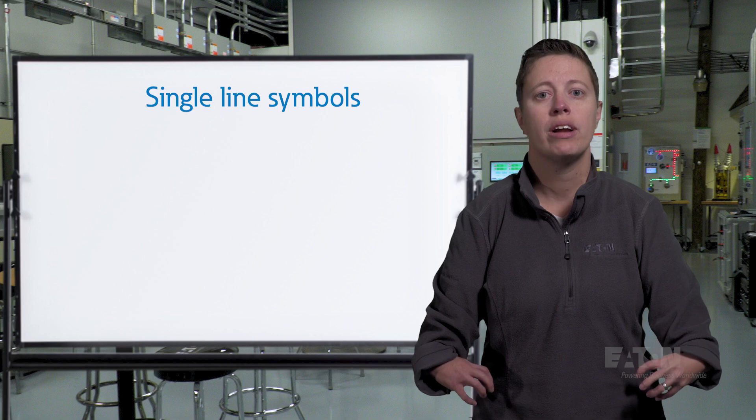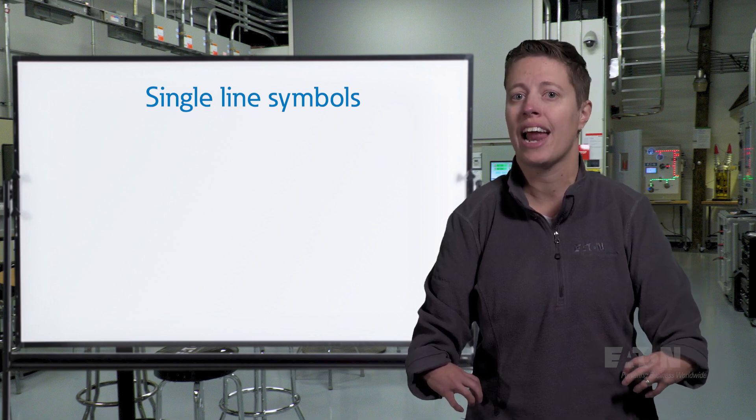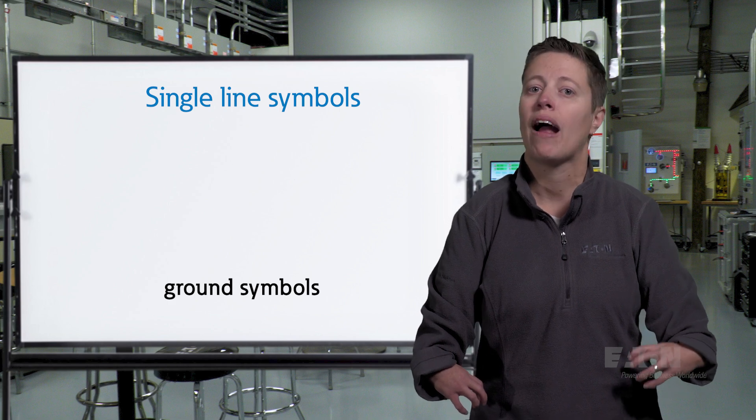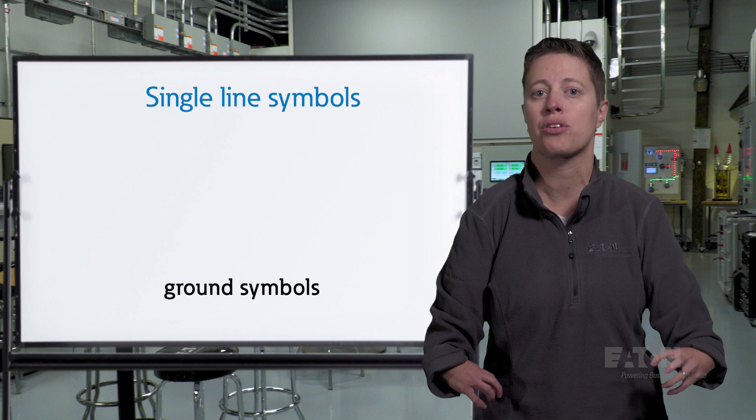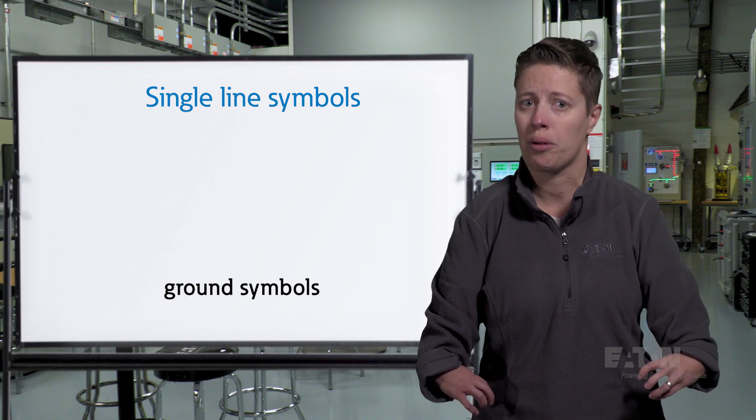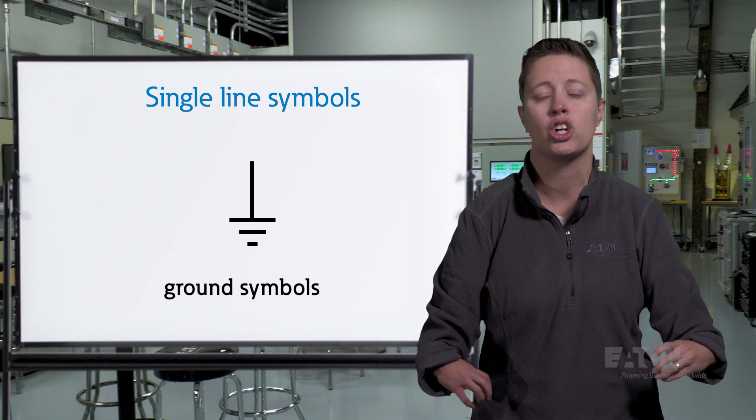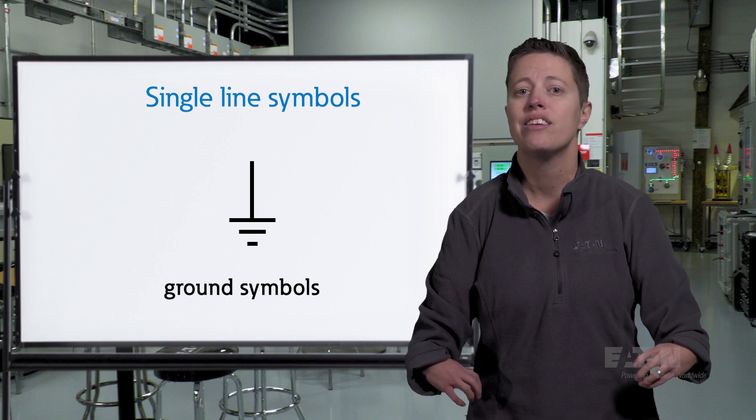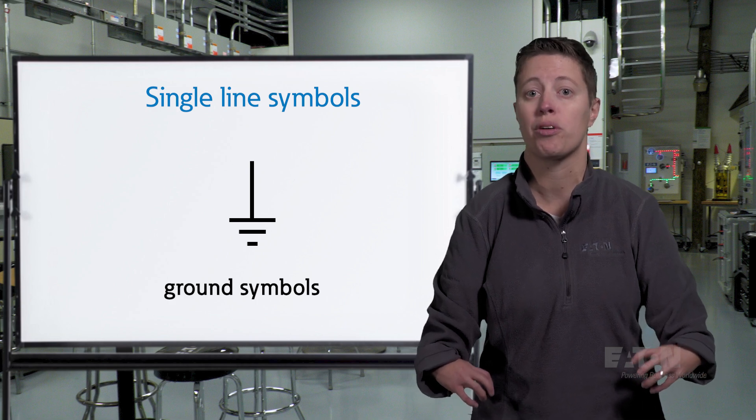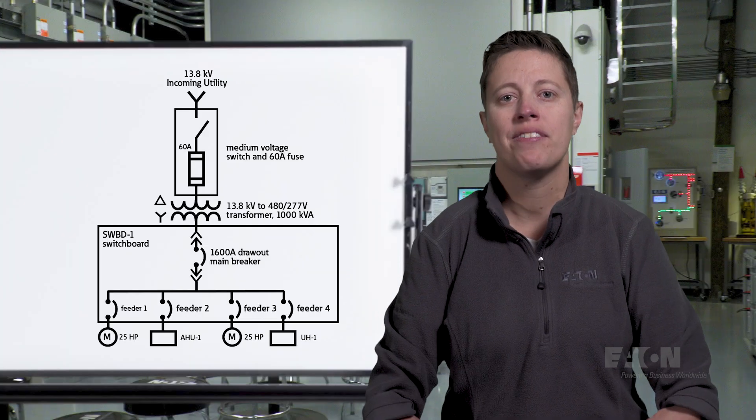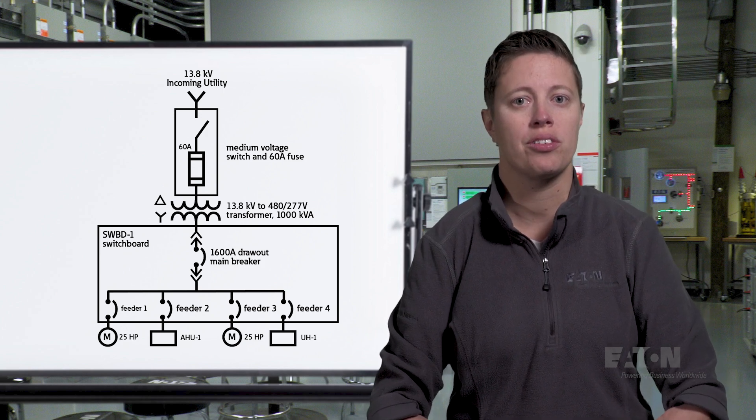In addition to sources, transformers, and circuit opening devices, it's always important to look for any ground symbols. The ground symbol is crucial for safety as it represents the point where the electrical system is connected to ground. The ground symbol looks like a series of horizontal lines that get shorter as they go down. This symbol indicates a connection to the earth, which helps protect the system from electrical faults. Now that we have identified the basic symbols on a single line, let's look at an example power system.